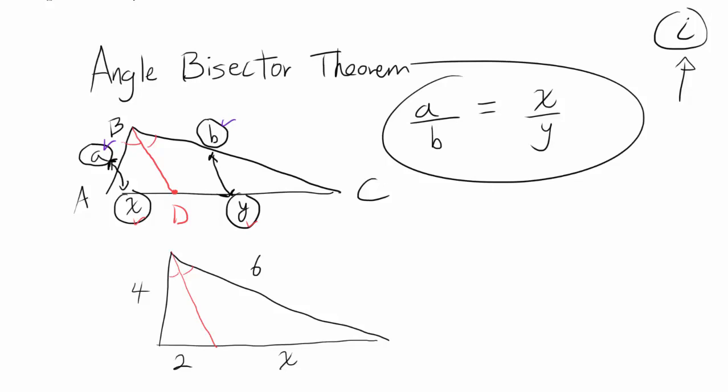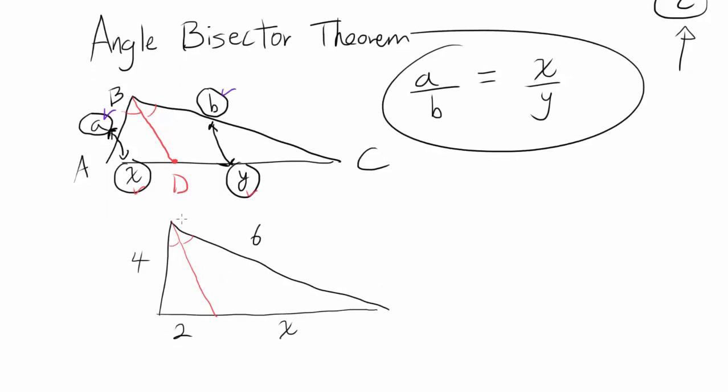So let's try to apply angle bisector theorem to this question. So you have 4, 6, 2, and X, and you wish to find X. By just applying angle bisector theorem, you know 4 divided by 6 is equal to 2 divided by X. That's a straightforward application of angle bisector theorem. This thing divided by this thing is equal to this thing divided by this thing when you have an angle bisector.